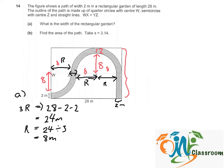So the width of the rectangular garden will be simply 2 plus 8 plus 8 plus 2 equals 20 meters.